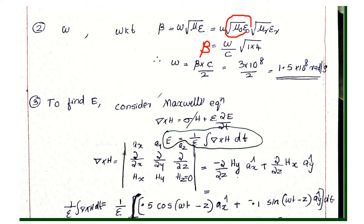To find E, we use Maxwell's equation del cross H. Del cross H is equal to sigma H plus epsilon into dou E by dou t. If we cancel sigma to zero, we get epsilon into dou E by dou t. So E is equal to 1 by epsilon integral of del cross H dt.